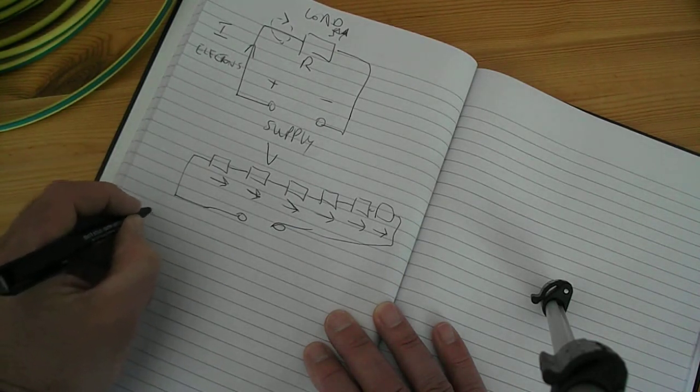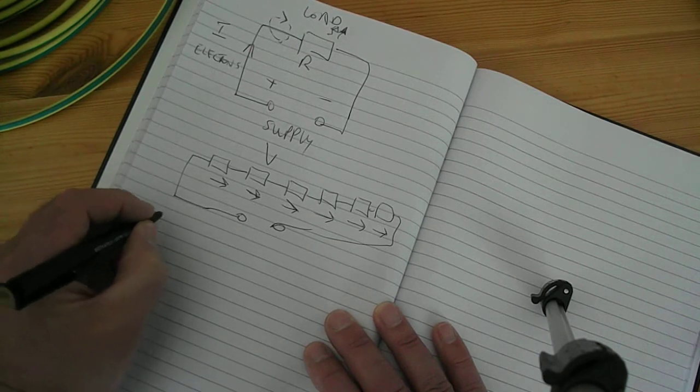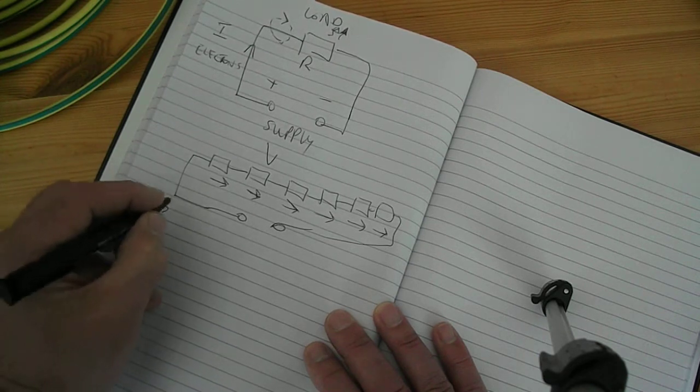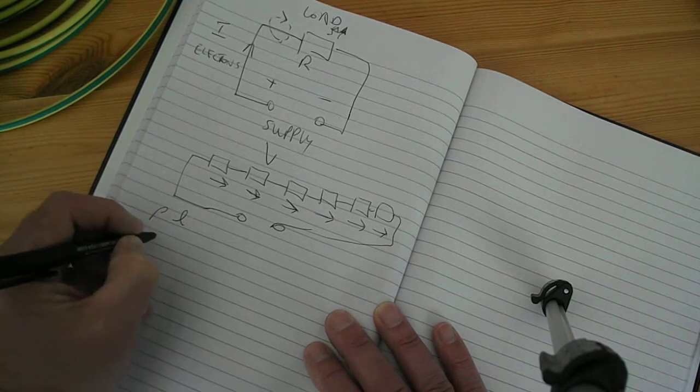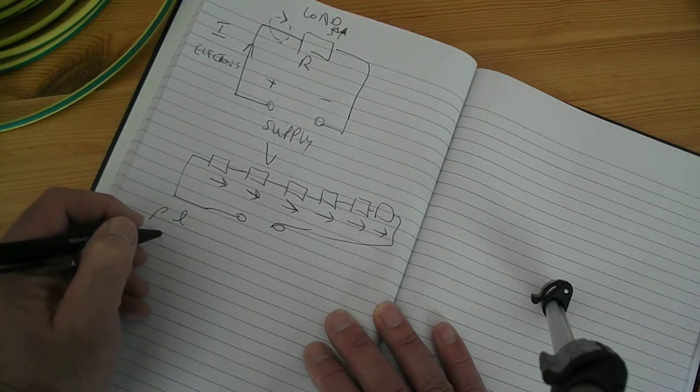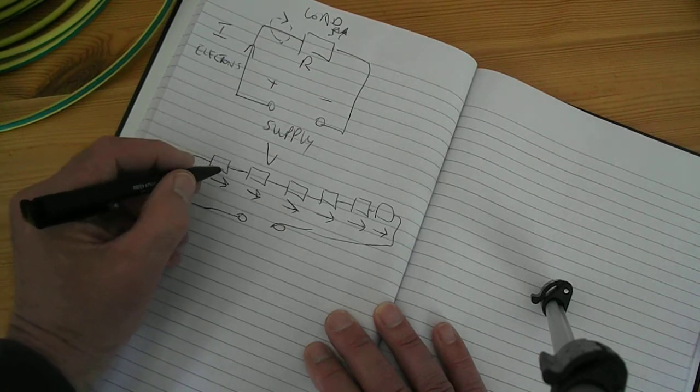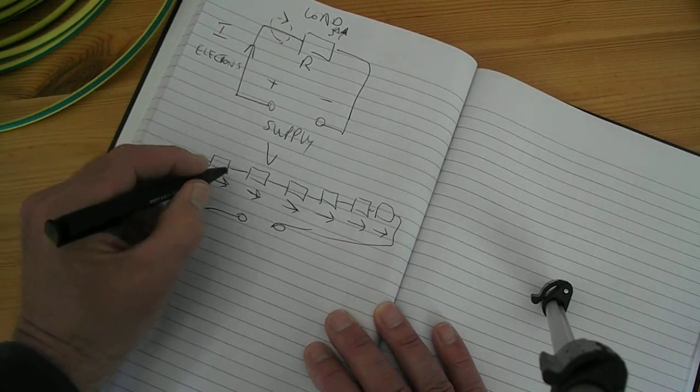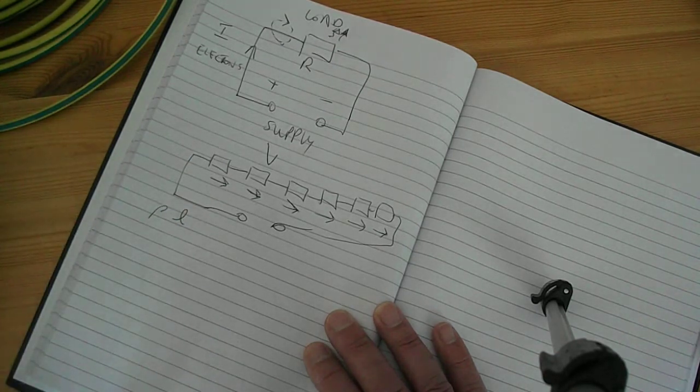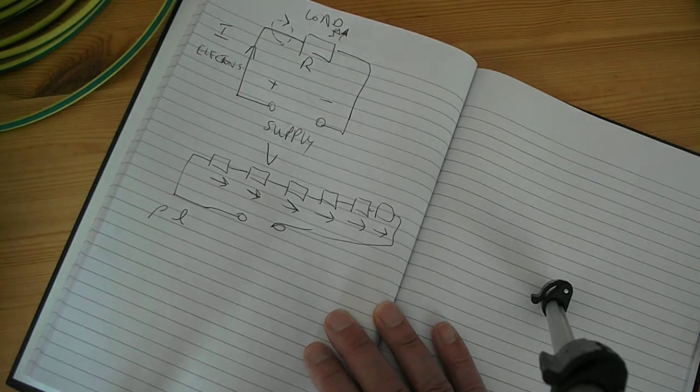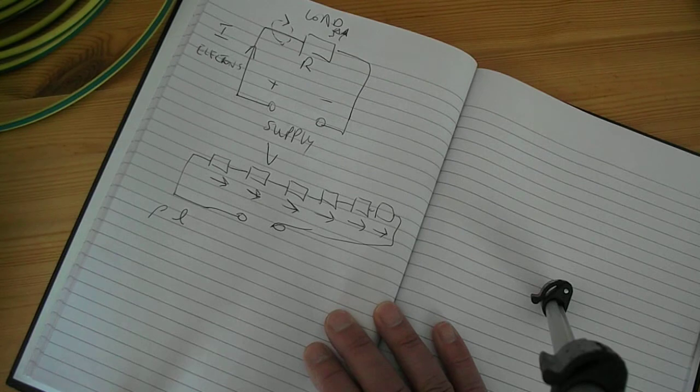So volt drop is caused by the resistance of the cable, or the resistivity of the cable rho, and also its length, and also its cross-sectional area. But it's mainly the resistance of the cable, and its cross-sectional area, and its length that causes the volt drop. So the longer the cable, the greater the volt drop. The higher the current, the greater the volt drop. The higher the resistance, the greater the volt drop.